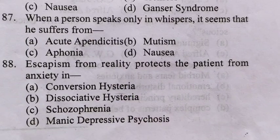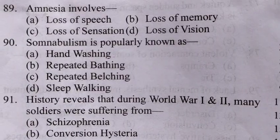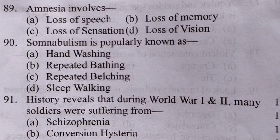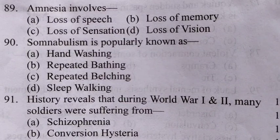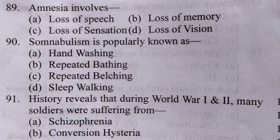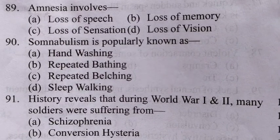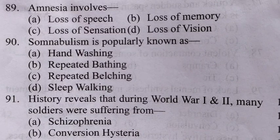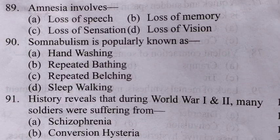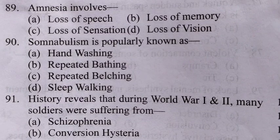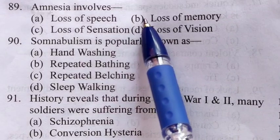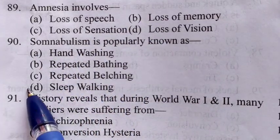89th question: Amnesia involves — amnesia inme se kis se sambandhit hai. 89th ka answer hai B, loss of memory — bhoolne ki jo problem hai, woh hone lagti hai amnesia mein. 90th question: Somnambulism is popularly known as — jo somnambulism hai, this is sleep walking. D would be the answer. 89th ka answer B, loss of memory, aur 90th ka answer hai D, sleep walking.